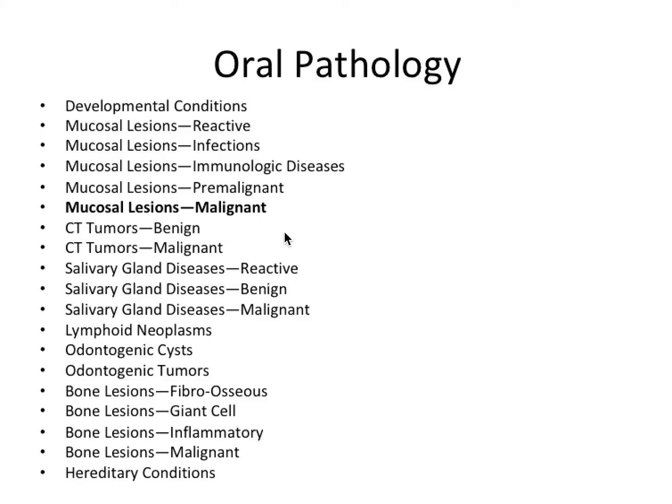Most cancers manifest as non-painful and non-healing indurated ulcers, and induration is a key component to most of these cancers that we're going to talk about. The floor of the mouth and the posterior lateral tongue are the number one and number two high-risk sites respectively — super important things to remember.